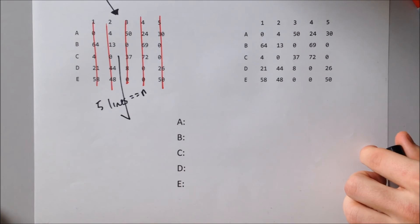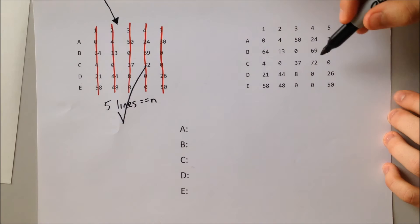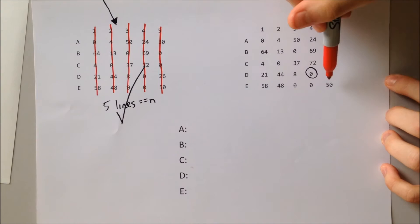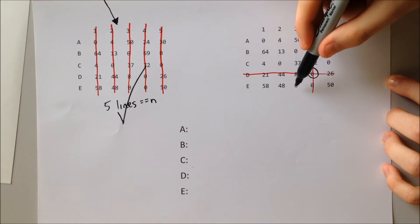We can start pairing workers to jobs. We start with the row with only one zero on, and we pair this straight away. So worker B gets paired to job four. We then cross out the row and the column, and move on.